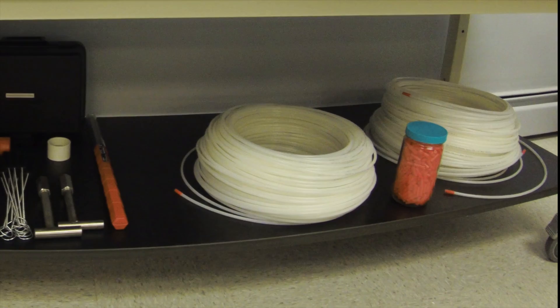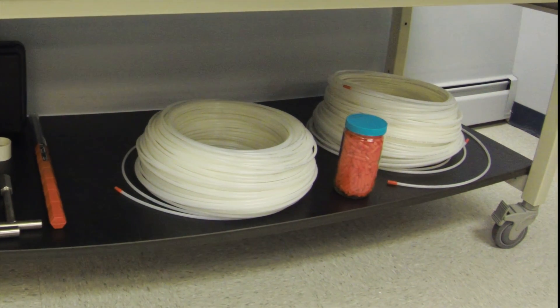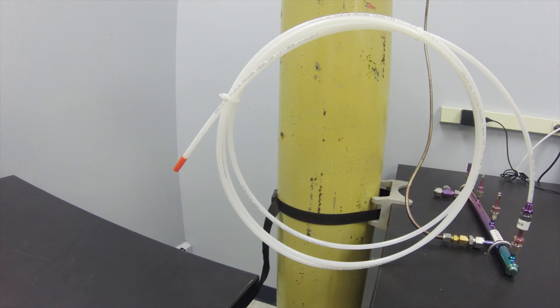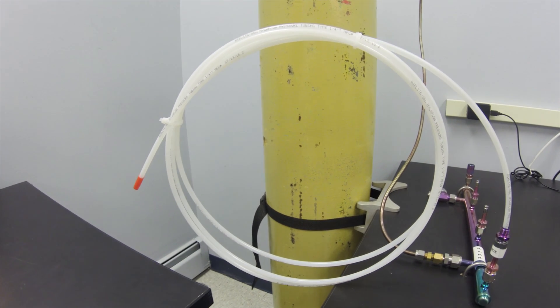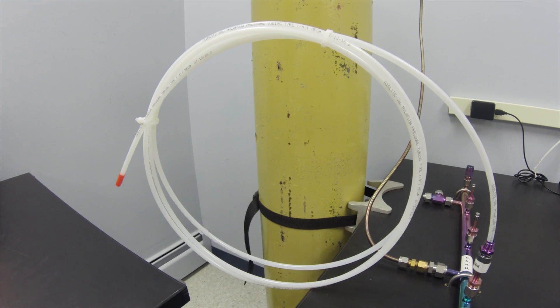Most tubing off-gases VOCs. Through extensive testing, we have found a type that does not off-gas target VOC compounds. Each lot is tested to ensure it is clean, then flushed and filled with ultra-pure nitrogen before being capped for use in the field.